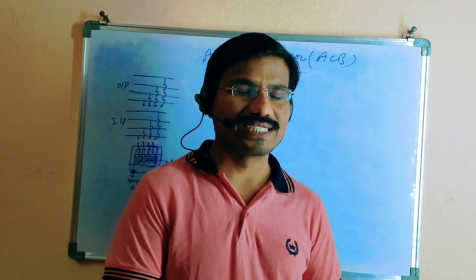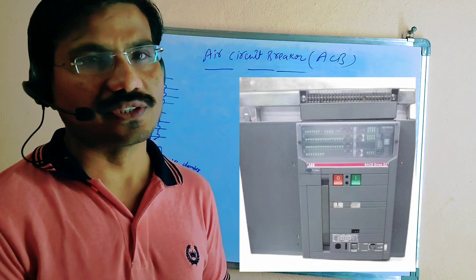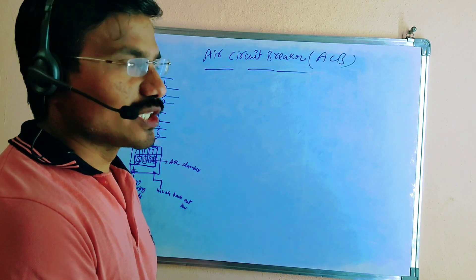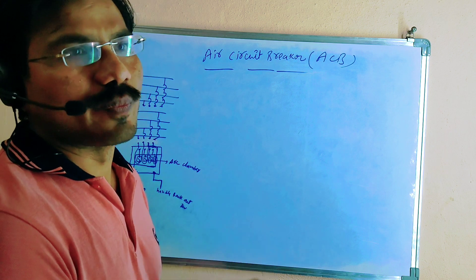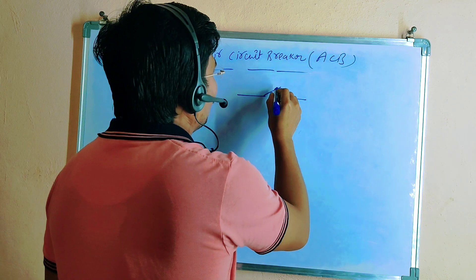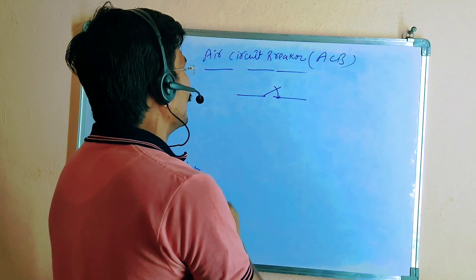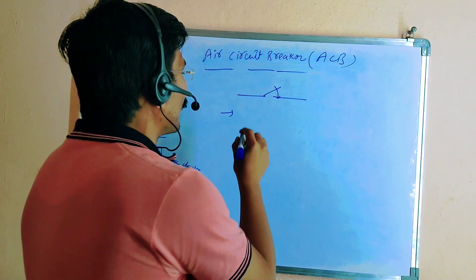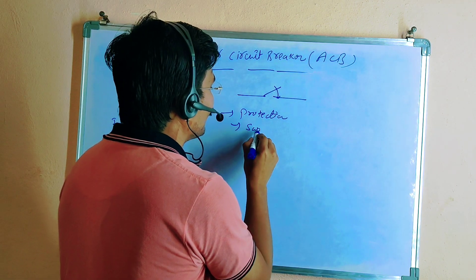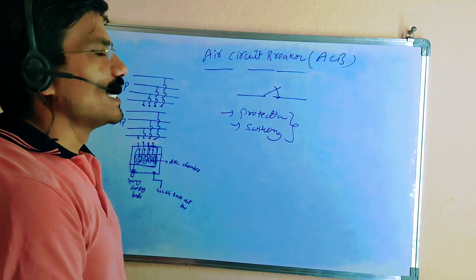Hi friends, today we are discussing one more concept: the air circuit breaker. The air circuit breaker is used to make and break the circuit manually as well as automatically. The main uses of the ACB are protection purpose and switching purpose. These are the two uses of air circuit breakers.